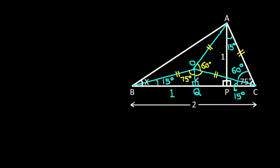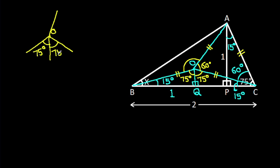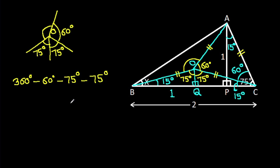This angle will also be 90 degrees minus 15 degrees, that will be 75 degrees. This angle at O is 75 degrees, this angle is 75 degrees, this angle is 60 degrees. So this angle will be 360 degrees minus 60 degrees minus 75 degrees minus 75 degrees, that will be 150 degrees.